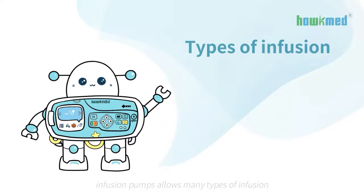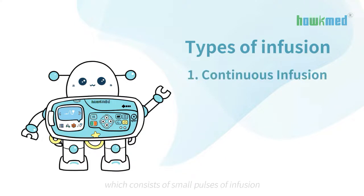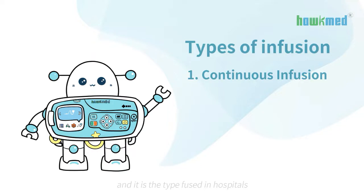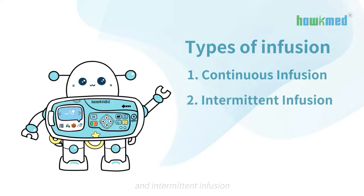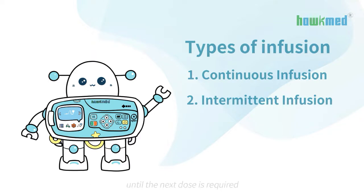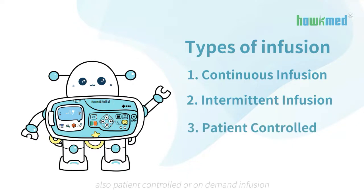Infusion pumps allow many types of infusion. First, continuous infusion which consists of small pulses of infusion, usually between 20 nanoliters and 100 microliters depending on the pump's design, and it is the type used in hospitals. And intermittent infusion, which is an infusion of a volume of medication over a set period of time at prescribed intervals and then stopped until the next dose is required. Also, patient controlled or on-demand infusion, which is a pre-programmed infusion and the patient uses it when he wants to have the dose.